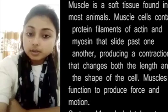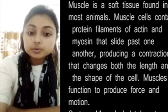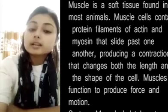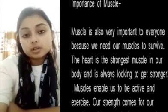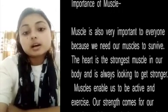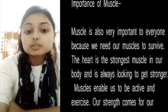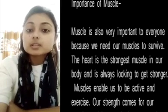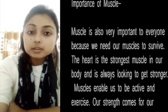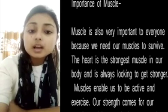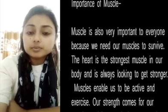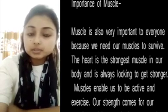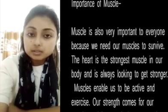Involuntary muscles are those whose movement is not under our control, for example our heart muscle and intestine muscle. Involuntary muscles are of two types: smooth muscles, which are present in our stomach and intestine, and cardiac muscle, which is present in the heart.